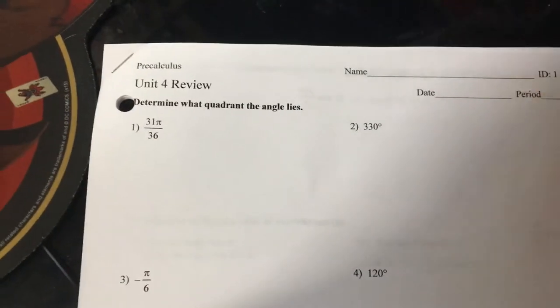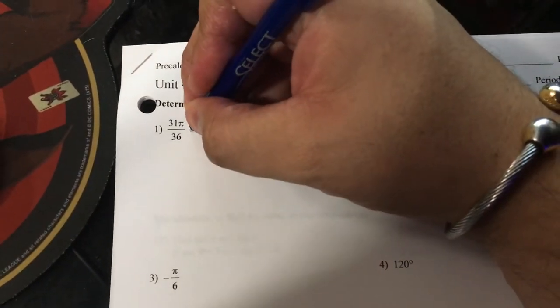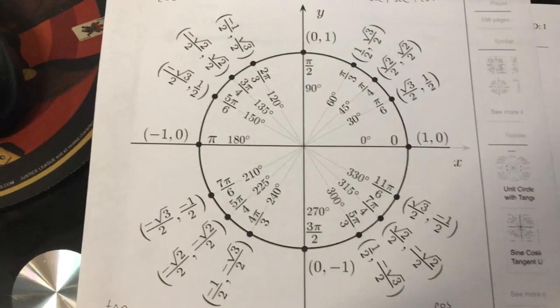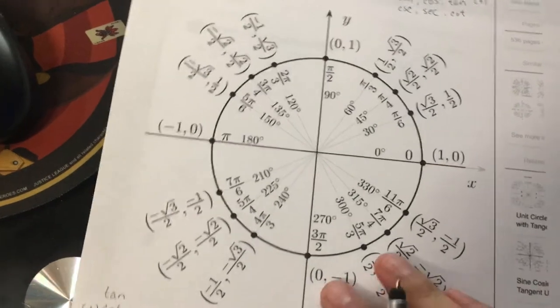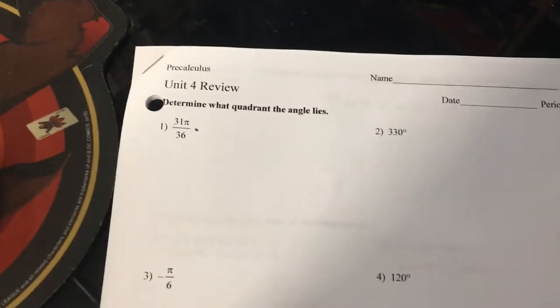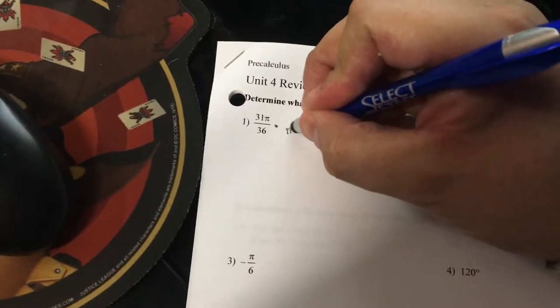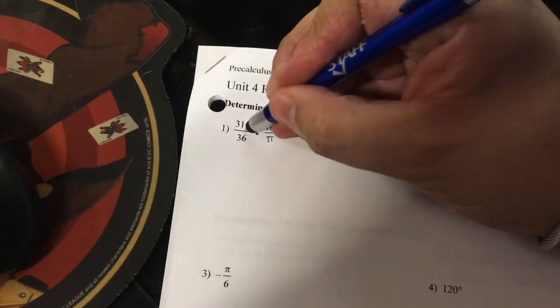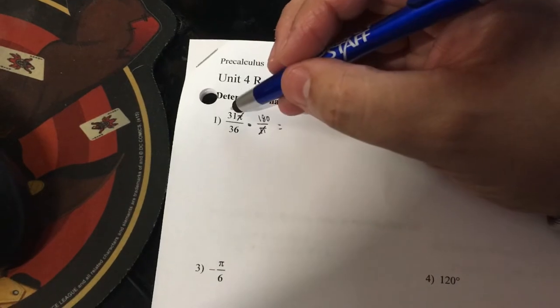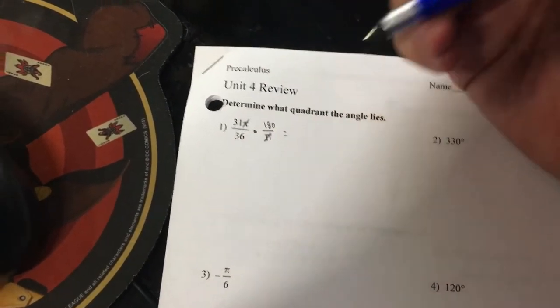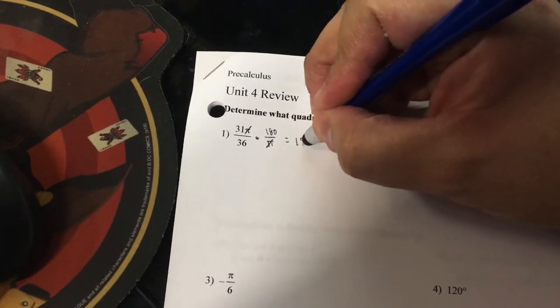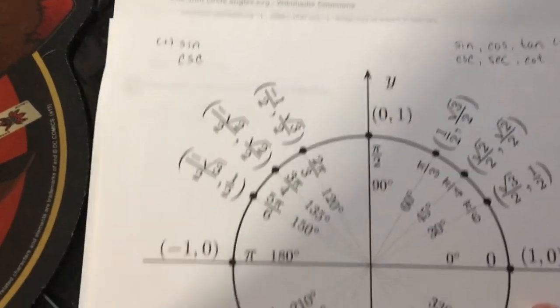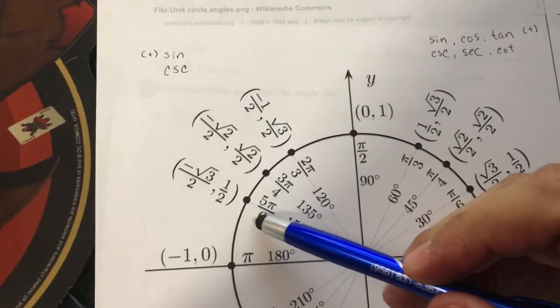If I look at number 1, 31π over 36, pi is not on my unit circle. I don't see it anywhere here, so what I'm going to have to do here is convert it. What I'm asking is what quadrant does it lie? So I would convert it like this by multiplying by 180 over π. Remember I'm starting with radians so I want to get rid of them. Multiply 31 by 180 divided by 36 and that will equal 155 degrees. Although that specific number's not on my unit circle, I know it would be about right here, which means it would be in quadrant two.